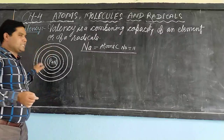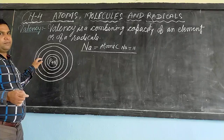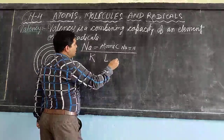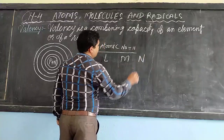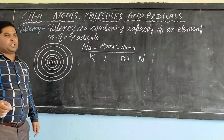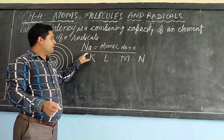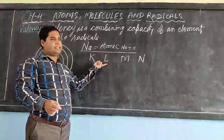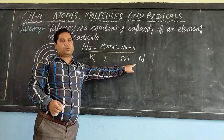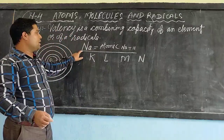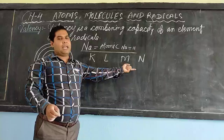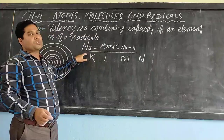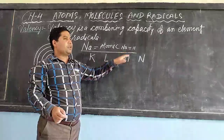In an atomic structure, the shells are K, L, M, and N. As I explained in the previous video, K has a capacity of 2 electrons, L has 8, M has 18, and N has 32. Now, sodium with atomic number 11 — by the help of electronic configuration we will try to find the valency of sodium.